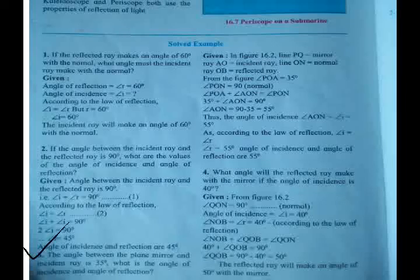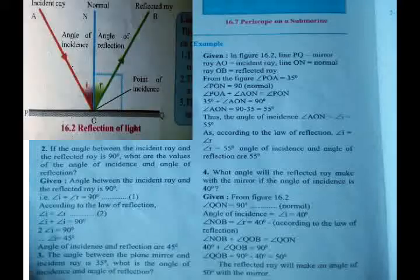Next example: the angle between the plane mirror and the incident ray is 35 degrees. What is the angle of incidence and angle of reflection? For this sum, you have to refer to figure 16.2 on textbook page number 111. From figure 16.2: line PQ is the mirror, ray OA is the incident ray, line ON is the normal, and ray OB is the reflected ray.